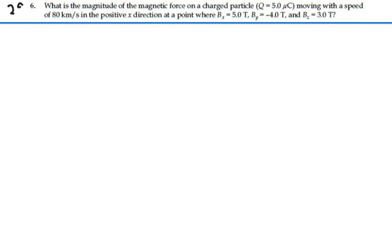Here's problem 29.6. What's the magnitude of the magnetic force on a charged particle, Q equal to 5 microcoulombs, moving with a speed of 80 kilometers per second in the positive X direction at a point where BX equals 5 Tesla, BY equals minus 4 Tesla, and BZ equals 3 Tesla?